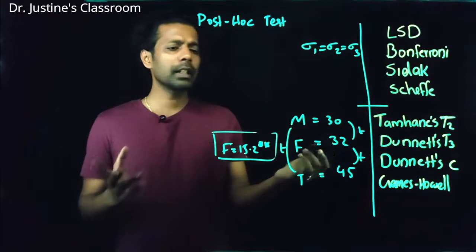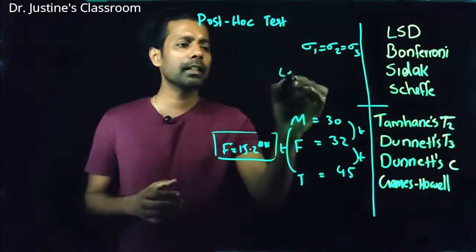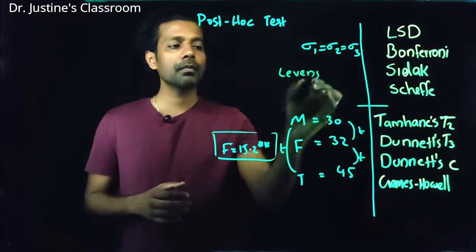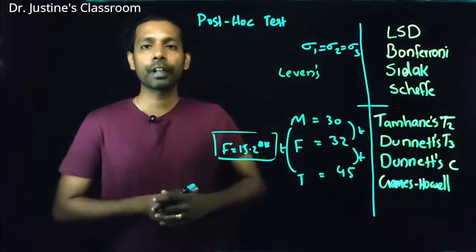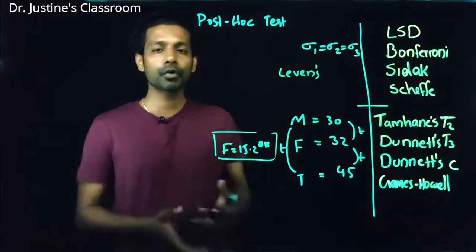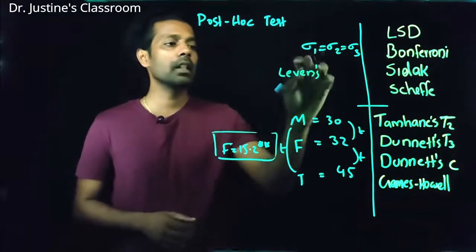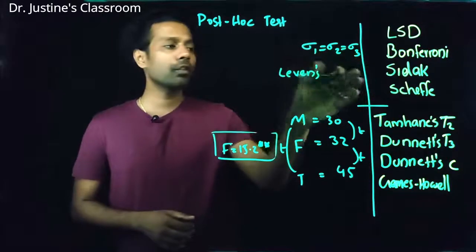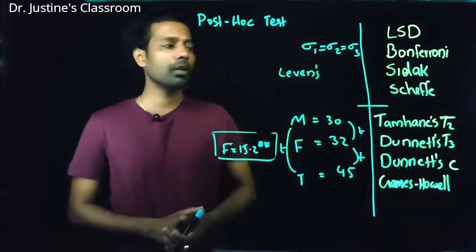Which test can be used for that? Generally, we use a test called Levene's test for equality of variance. That's generally the most frequently used test to understand whether the standard deviation or variance of all these groups are equal or not equal.